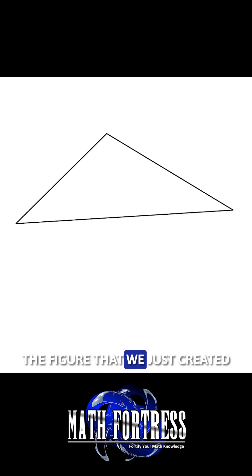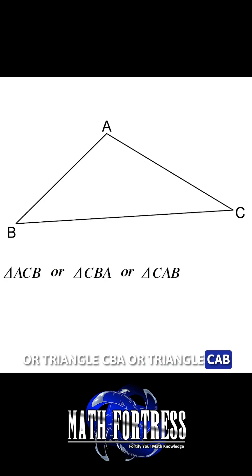Alright, the final figure we will talk about is formed by using three segments and combining them in the following way. The figure that we just created is called a triangle and we denote it as follows: triangle ABC or triangle ACB or triangle CBA or triangle CAB or triangle BAC or triangle BCA.